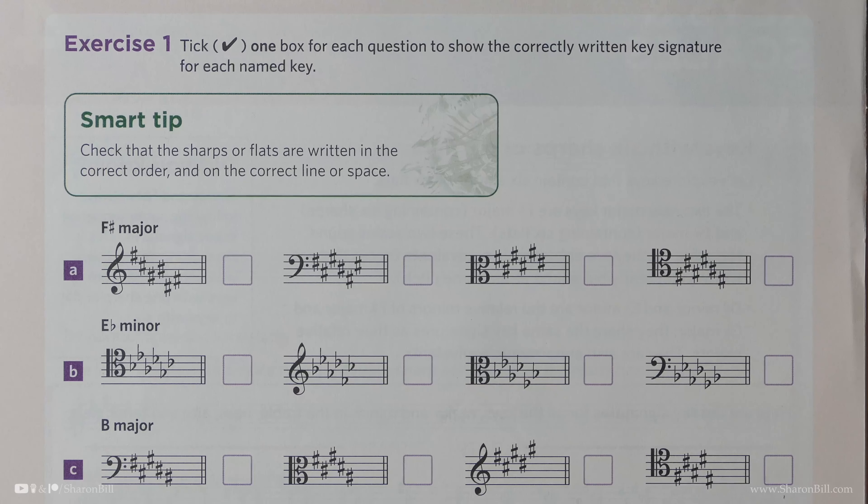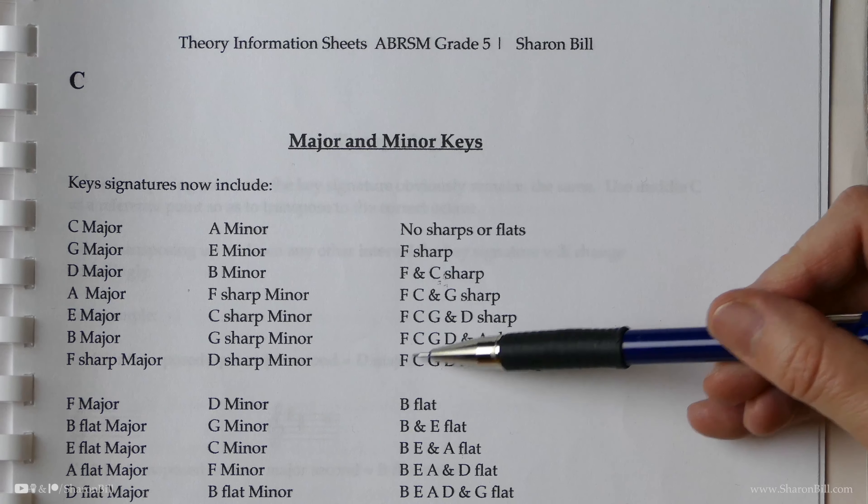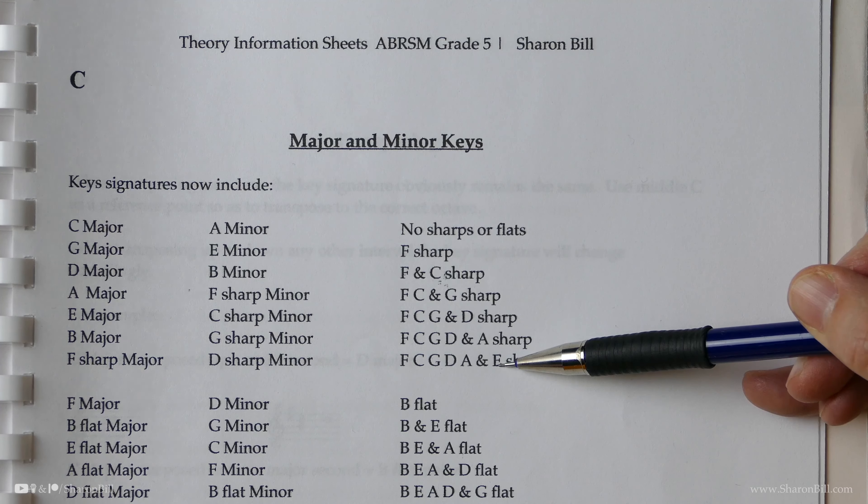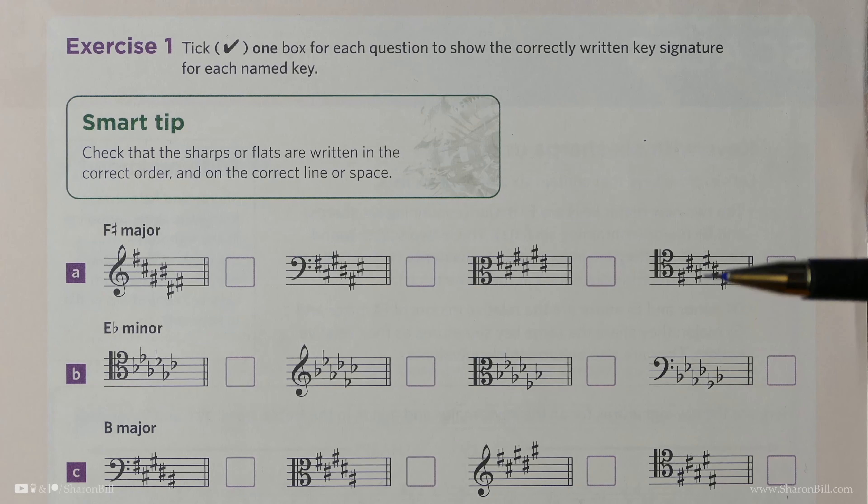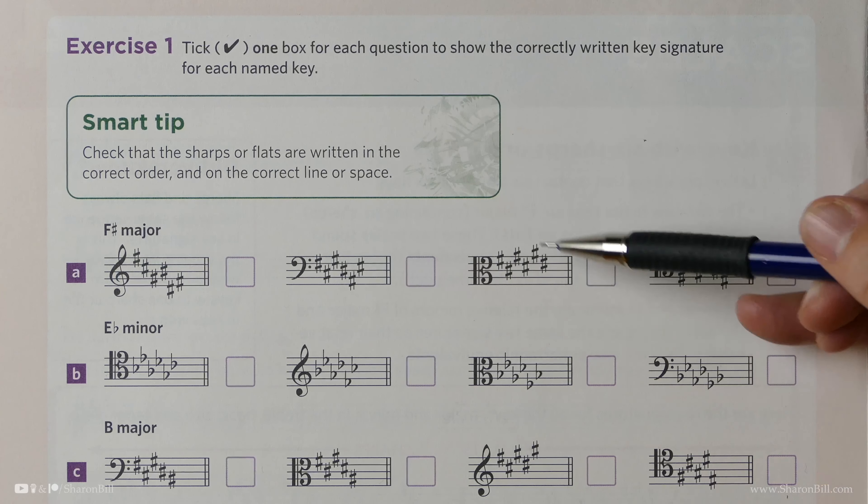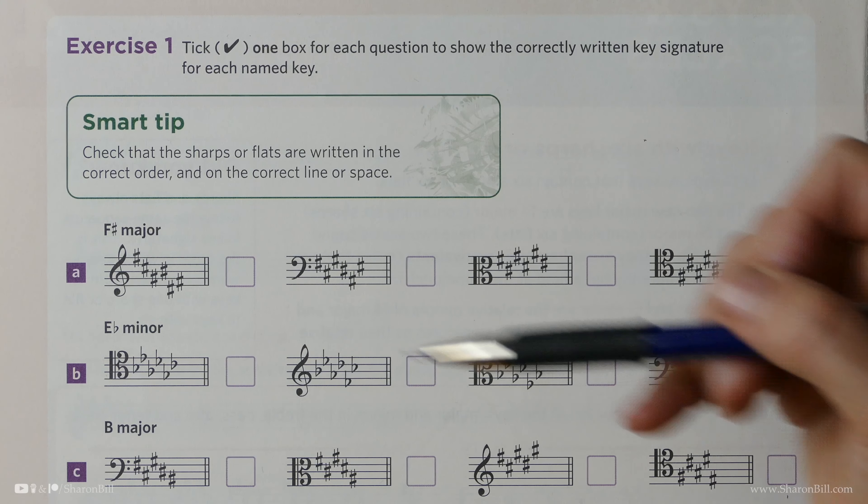And if you do your circle of fifths, we can see that F-sharp major does have six sharps, F-C-G-D-A-E. However, not all of these are written correctly. They've all got six sharps, but they're not written correctly.